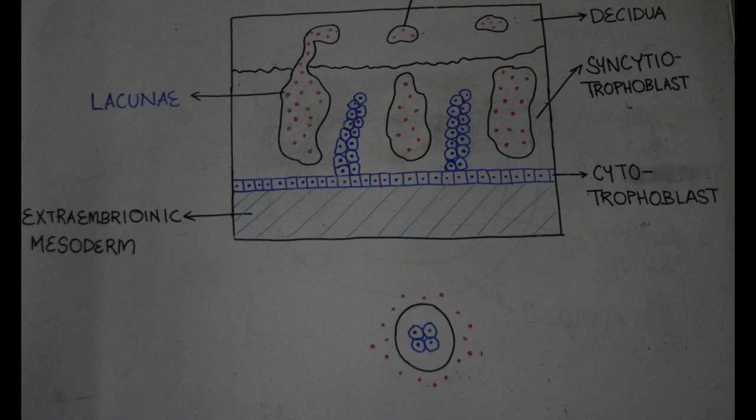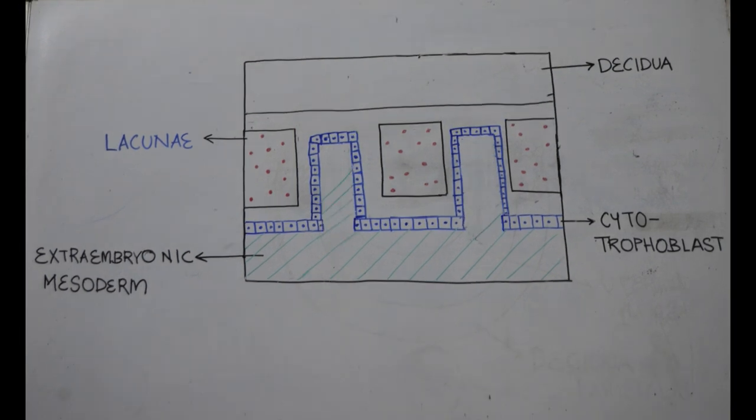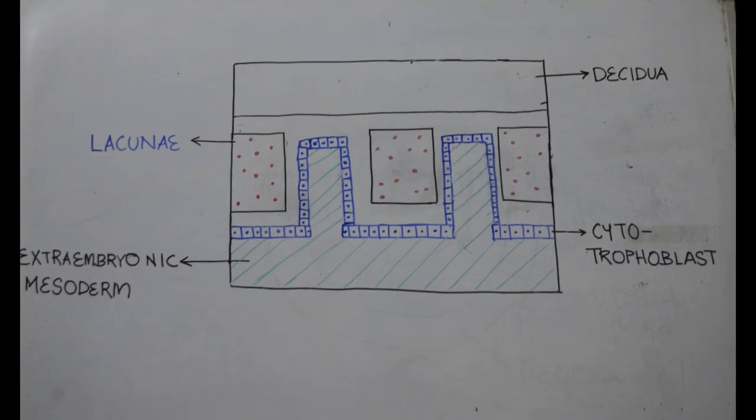Extraembrionic mesoderm invades the center of each primary villus. The villus now has a core of mesoderm covered by cytotrophoblast and by syncytium. This structure is called a secondary villus.